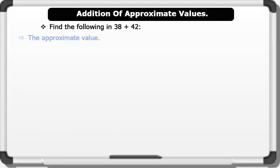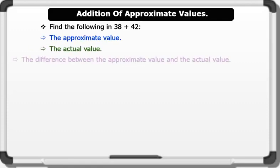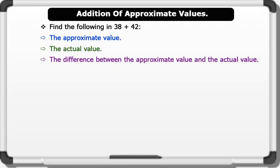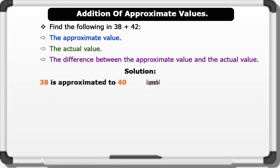Let's see some examples. Example 1: Find the following in 38 plus 42 — the approximate value, the actual value, and the difference between the approximate value and the actual value.